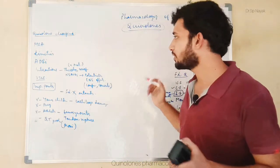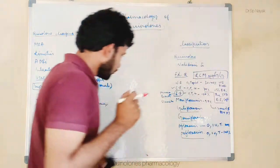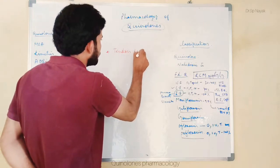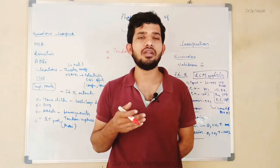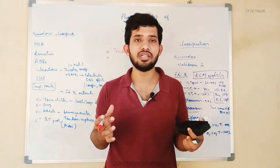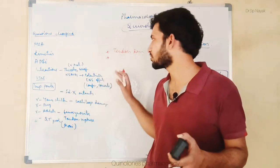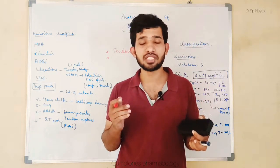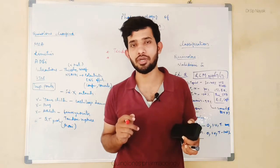Now let us discuss the adverse drug reactions of fluoroquinolones. Remember one very important point: fluoroquinolones cause tendon rupture and tendon damage — that is one key adverse drug reaction. Most fluoroquinolones cause gastric irritation, nausea, and vomiting. Some cause CNS-related ADRs like confusion, delusion, and sometimes depression. Also remember that in pharmacokinetics, heavy metals and antacids will reduce the absorption of fluoroquinolones from the GI tract — this is a very important point.